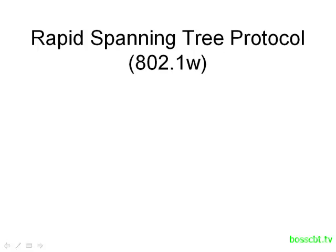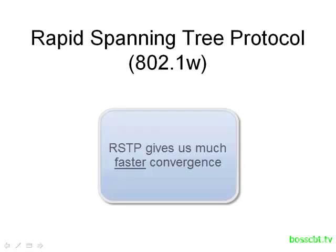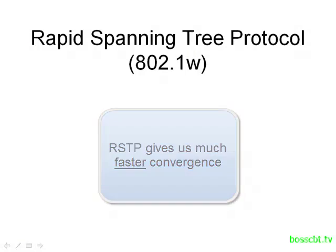Why did Rapid Spanning Tree come along? Even though we improved 802.1d with features like port fast, uplink fast, and backbone fast, there was still a lot of room for improvement because the demands on the network to converge faster and faster just kept growing. Simply put, Rapid Spanning Tree reduces the amount of time needed to converge, and that's really the big improvement in this version of Spanning Tree.